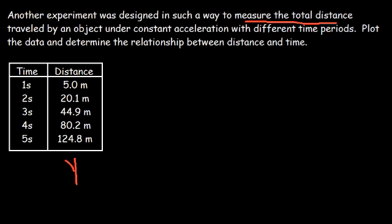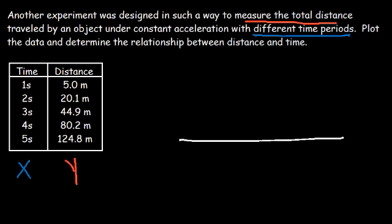The quantity that you want to measure is always the dependent variable, and you should put that on the y-axis. The quantity that you can adjust or control is the independent variable, and that goes on the x-axis. Notice that we measure the distance traveled by the object at different time periods — we can measure it in 3 seconds, 10 seconds. That means we can control the time. So distance is going to be on the y-axis, and time is on the x-axis.